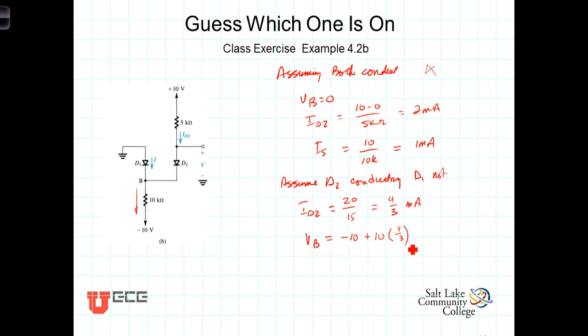Well, 10 times 4 thirds is 40 thirds positive. This is negative 30 thirds, so negative 30 thirds plus 40 thirds, that would be a positive 10 thirds.